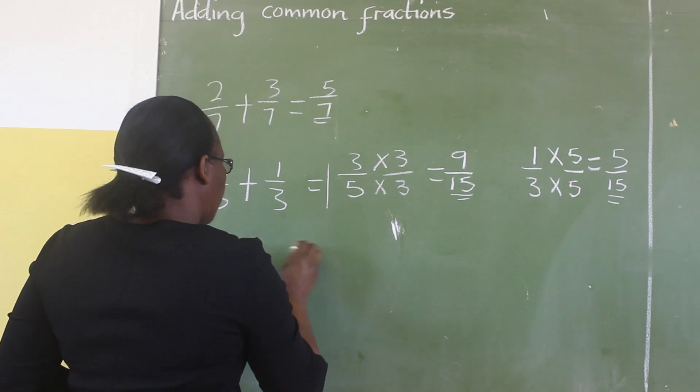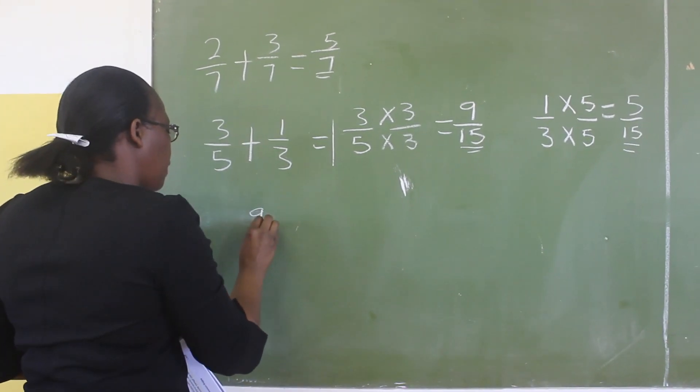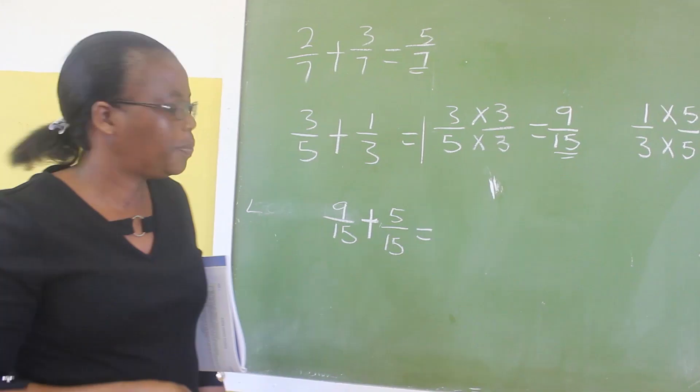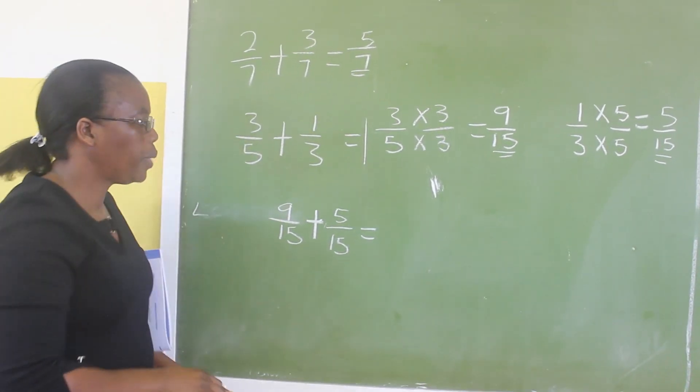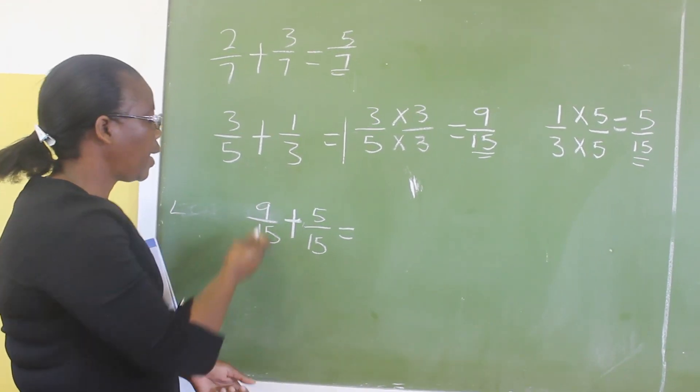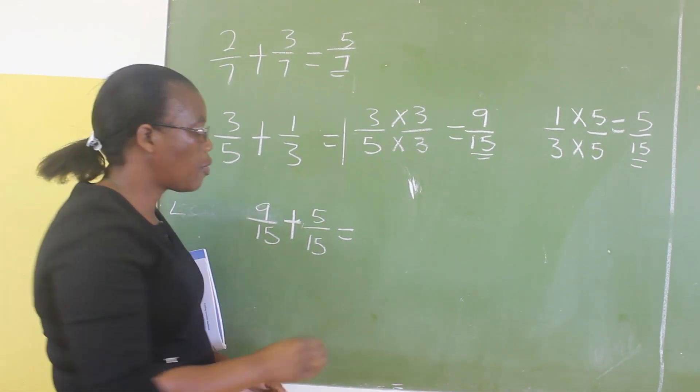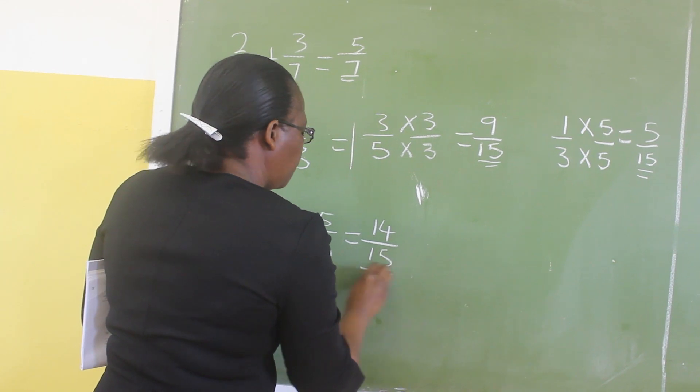Therefore, we take this, 9 over 15, so now we are having the same denominators and it's now easy for us to add. So now we are saying 9 plus 5, which is 14, so our answer is 14 over 15.